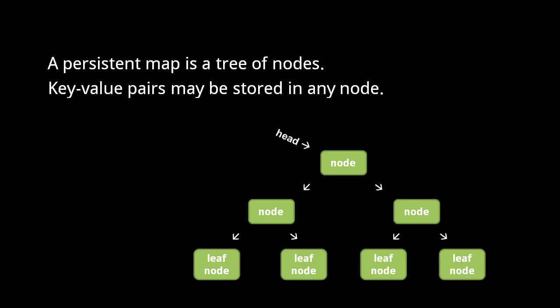As for Clojure's HashMaps, they use a very similar tree of nodes structure, but traversal for looking up a key value pair is based on a hash of the key. We won't discuss the details here.